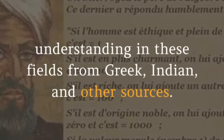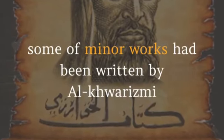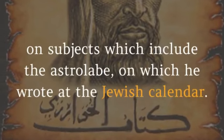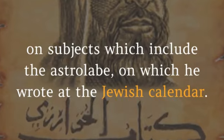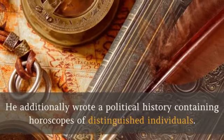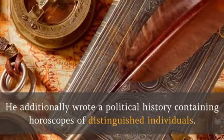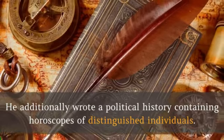Some minor works were written by Al-Khawarizmi on subjects including the astrolabe and the Jewish calendar. He also wrote a political history containing horoscopes of distinguished individuals.